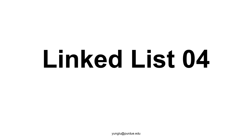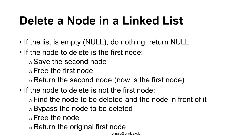This is the fourth lecture on linked lists. This lecture talks about the delete function, which deletes only one node in a linked list. This is different from the destroy function described in the third lecture — the destroy function deletes every node.